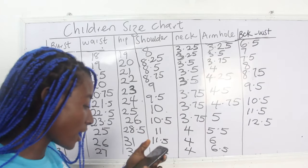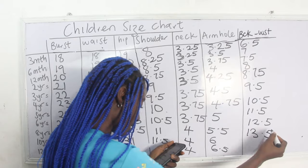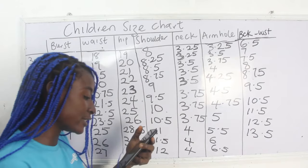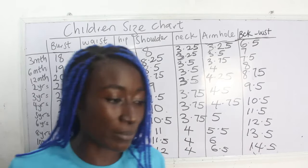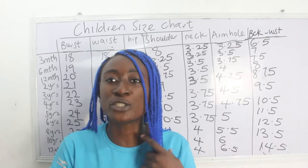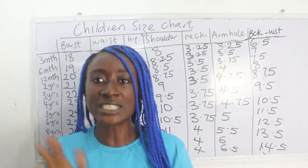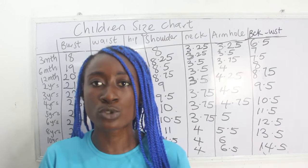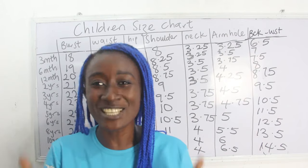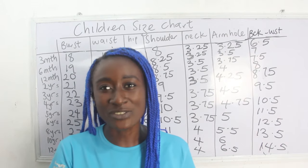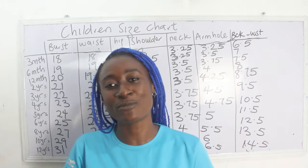For eight years: back-to-waist is 12.5 inches. For 10 years: 13.5 inches. For 12 years: 14.5 inches. So those are all the basic measurements for your children's size charts — bust, waist, hip, armhole, neckline, shoulder, and shoulder-to-waistline. I hope you enjoyed this video. Please give it a thumbs up, like, share, and subscribe. Let me know if you have any questions in the comments. Bye!